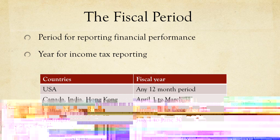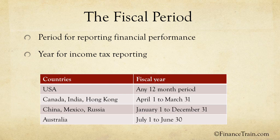In the US, a corporation can decide its own fiscal year — they can have their fiscal year as January 1st to December 31st or February 1st to January 31st, and so on. However, in most other countries there is a fixed fiscal year. For example, in Canada, India and Hong Kong, the fiscal year runs from April 1st to March 31st. In China, Mexico and Russia, the fiscal year is the same as the calendar year, that is January 1st to December 31st. In Australia, the financial year begins on July 1st and concludes on June 30th of the following year.